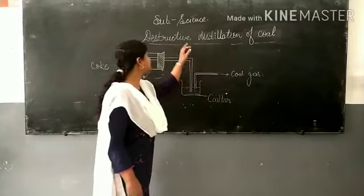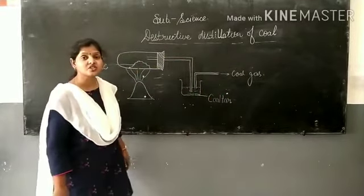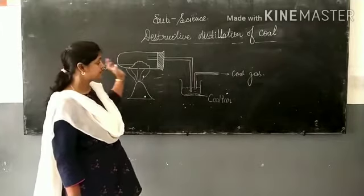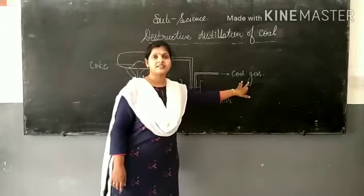So as a result of destructive distillation of coal, three substances are obtained which are coke, coal tar, and coal gas. Thank you.